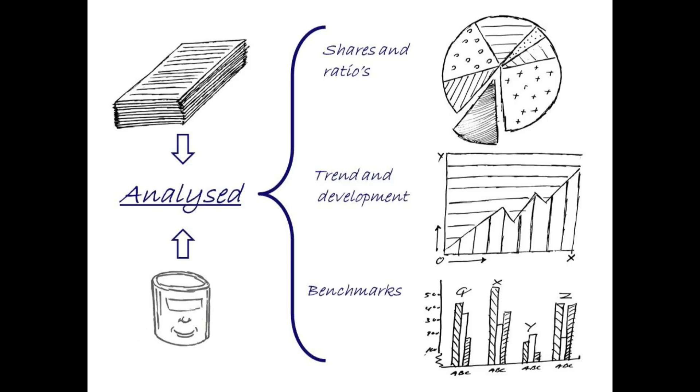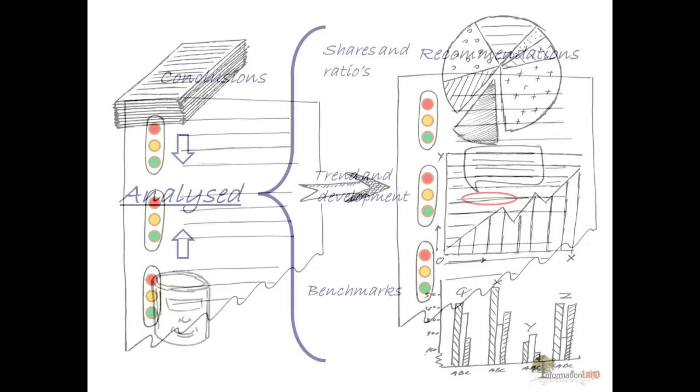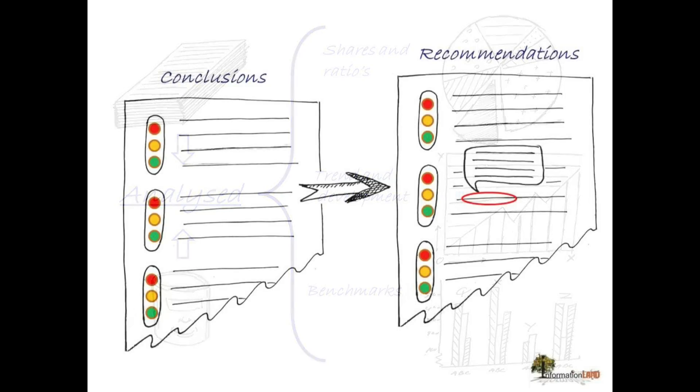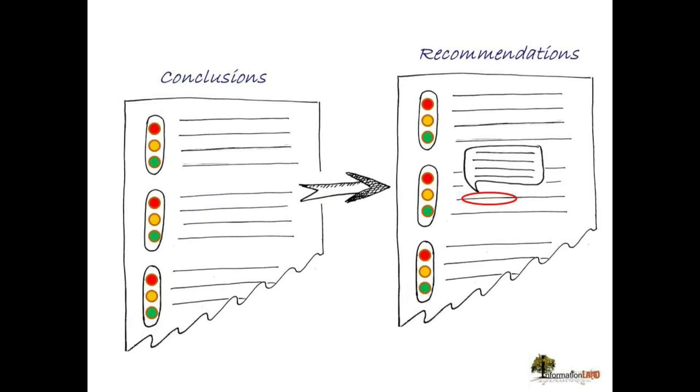You can even go further than that. You can say, I don't even just come with the analysis. For each and every analysis you can draw certain conclusions. For example, on conclusions you can even say, you know what, I give it a traffic light. I say if it is a negative conclusion, a red light, or a positive one, a green light, or an orange light when it's a neutral one.